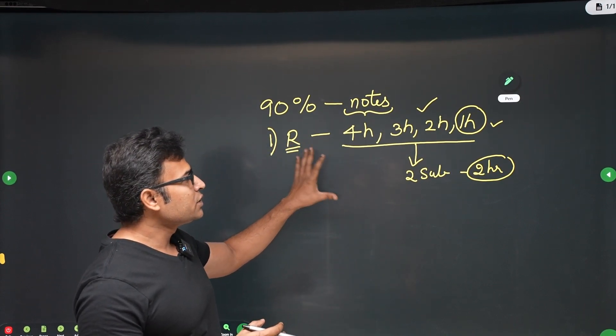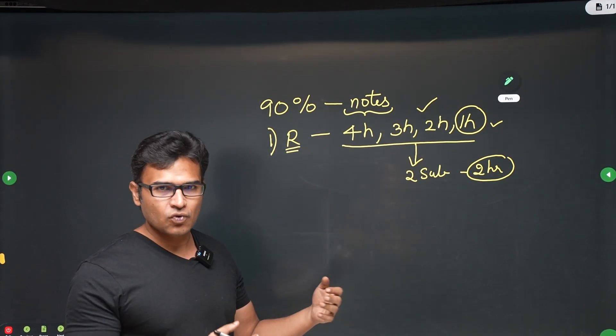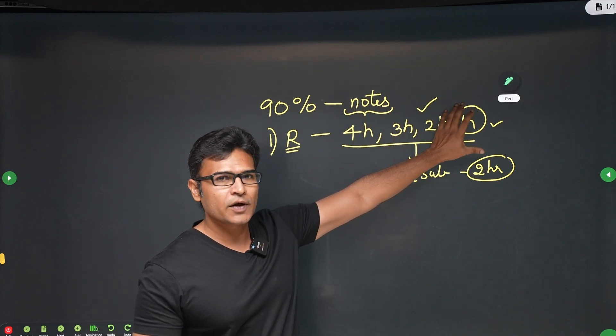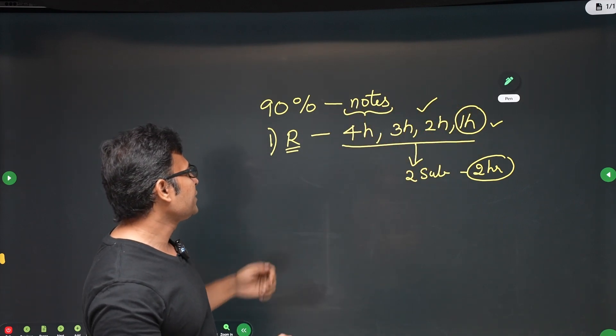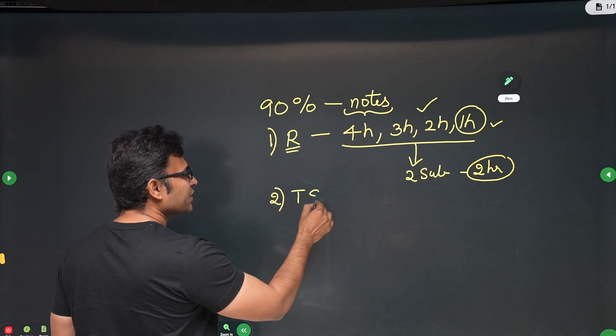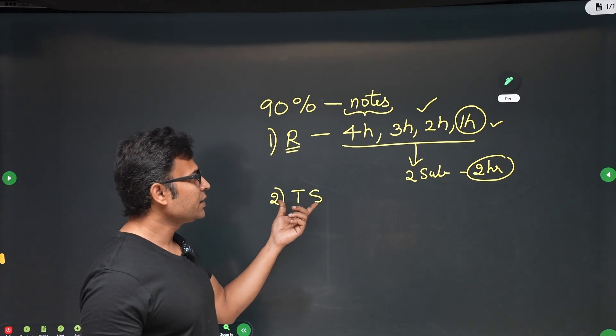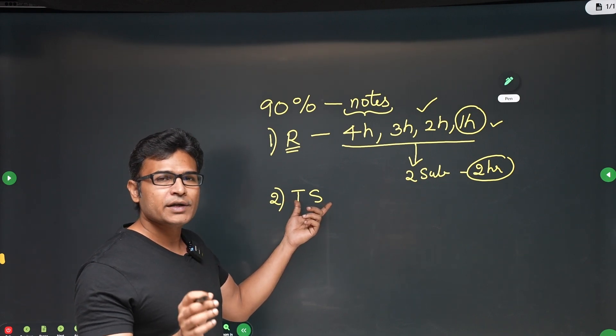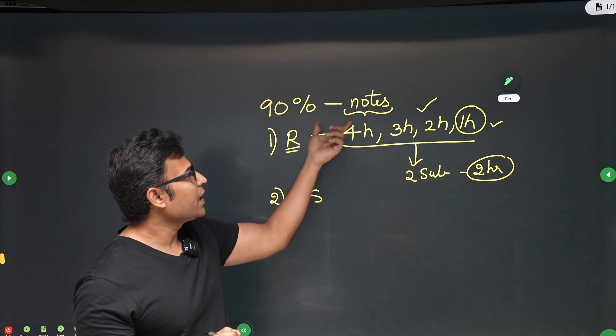Now after the revision is over, what should you be doing in this 4 months? Once you have reached a phase where you are able to revise a subject in 1 hour, what should you be doing next? The second most important thing is test series. Test series is not compulsory, but if you have time you can take it. But most important thing is revision, class notes and revision.